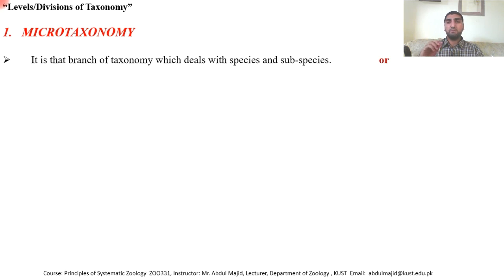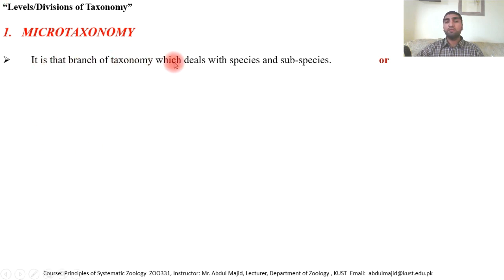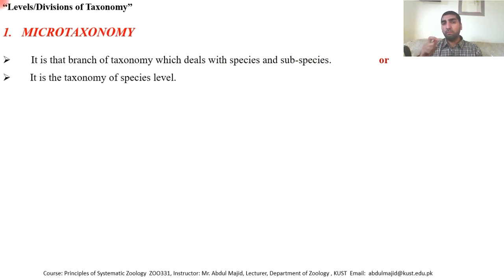Micro taxonomy — it's clear from its name — is when we study taxonomy at a micro level, a smaller level. In taxonomy, the smaller level is the species and subspecies level. Domain is at the top, then kingdom, then phylum, and so on, down to species and subspecies at the base, which is the foundation of classification. So the study of species and subspecies is called micro taxonomy.